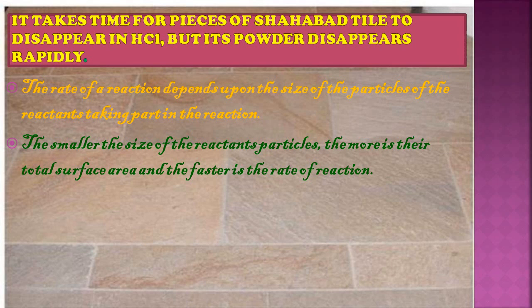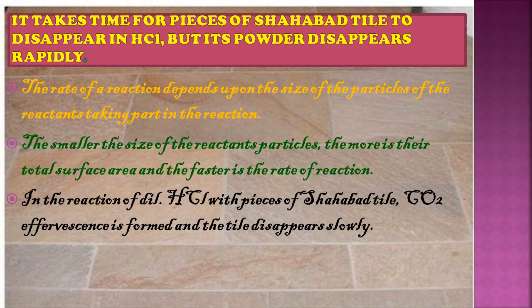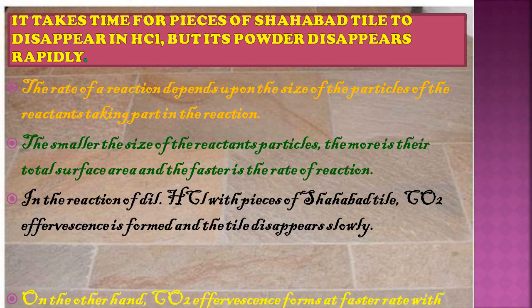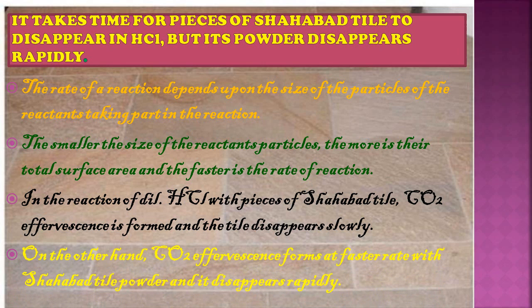In powdered shabat tile, the rate of reaction will be faster. In the reaction of dilute HCl with pieces of shabat tile, carbon dioxide effervescence (bubbling) is formed and the tile disappears slowly because the particle size is greater. On the other hand, carbon dioxide effervescence forms at a faster rate with shabat tile powder and it disappears rapidly. When particle size is smaller, the rate of reaction is faster; when particle size is larger, the rate of reaction is slower.